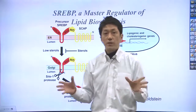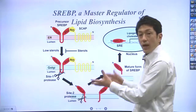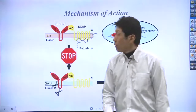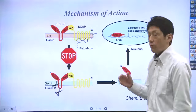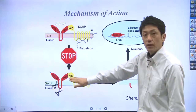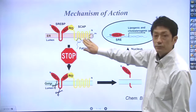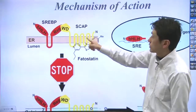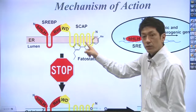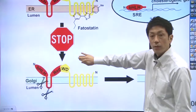Through various experiments, our research group confirmed that fatostatin blocks this activation process of SLBP. When moving from the endoplasmic reticulum into the Golgi complex, the SLBP is escorted by another protein called SCAP. The fatostatin binds to SCAP and prevents the SLBP from migrating into the Golgi apparatus.